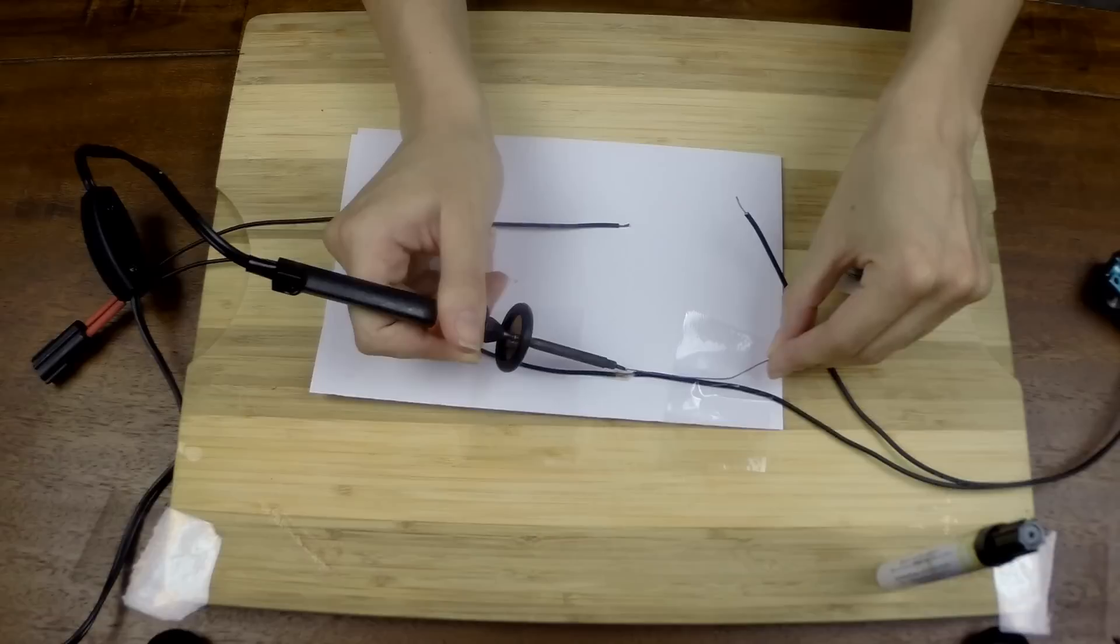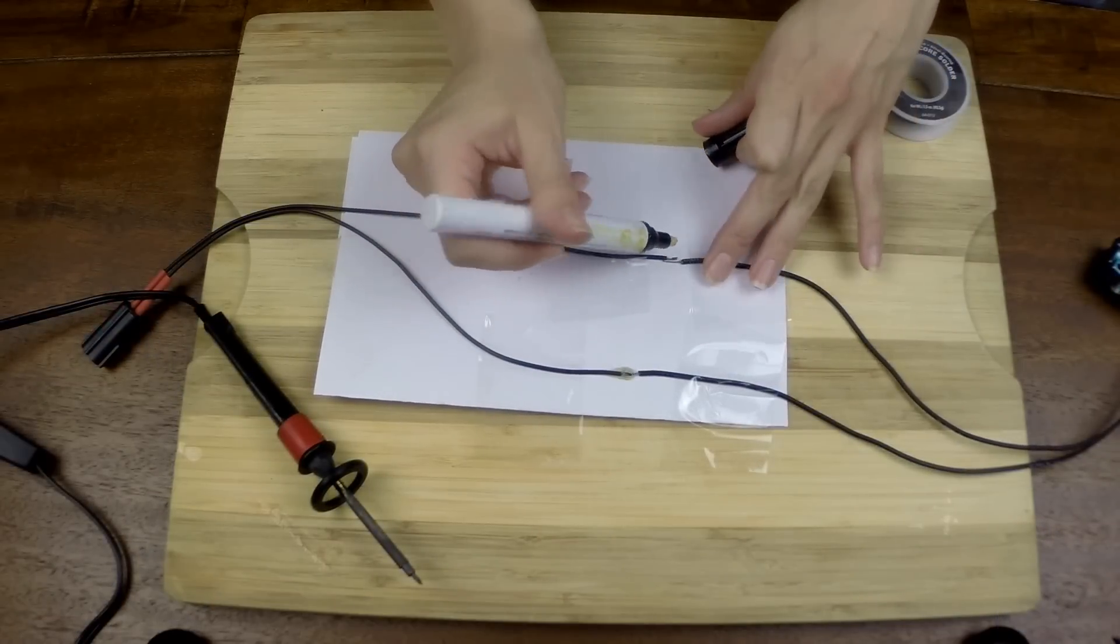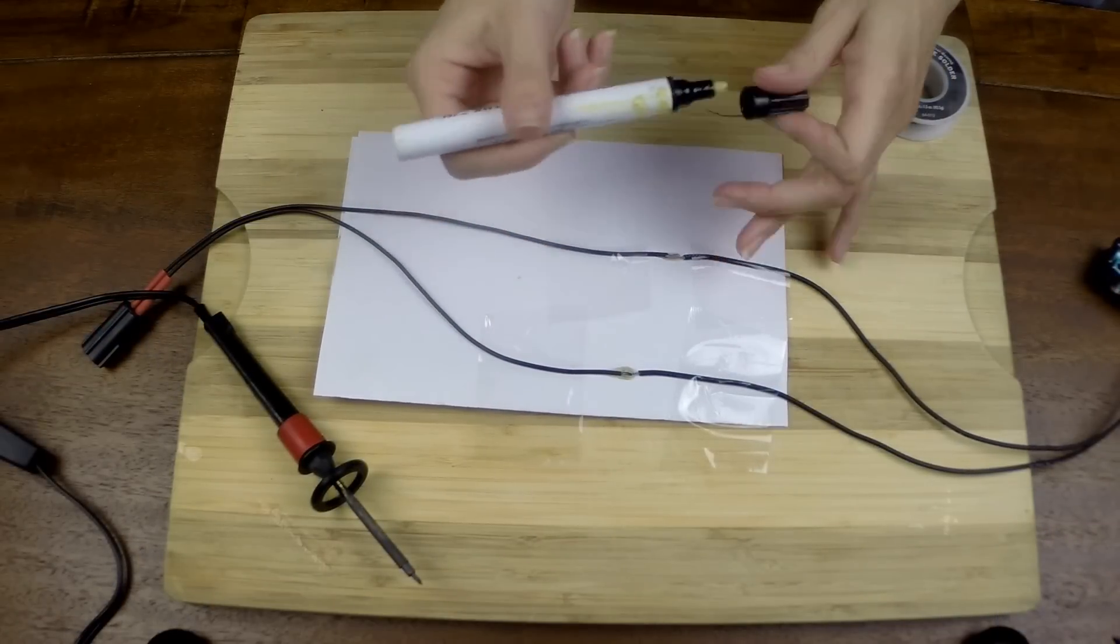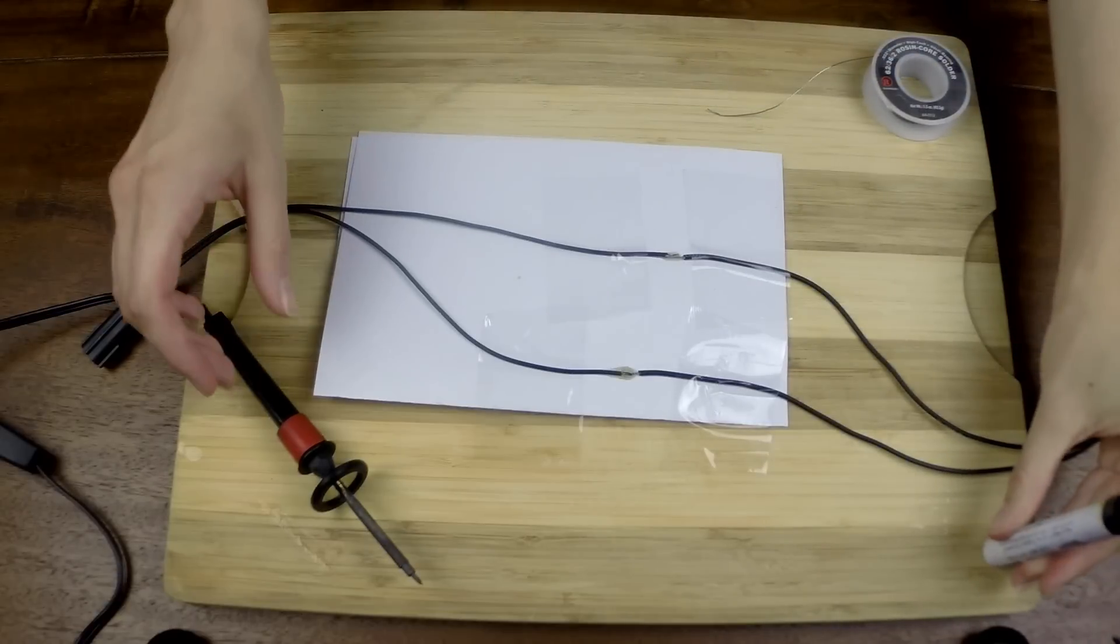FYI, polarity does not matter in this process. You do not have to solder specific wires to each other, you just need to separately solder the two wires coming from the solenoid to the harness.